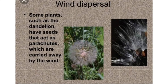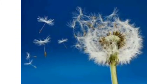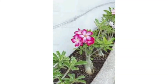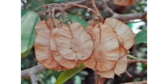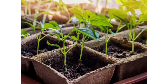First, dispersal by wind. Many seeds are carried away by the wind. The seeds of dandelion, desert rose, and milkweed are like parachutes. The winged seeds of the Indian elm tree glide in the wind. The wind carries such seeds away from the mother plant. Some of these seeds fall on the ground, get covered with soil, and germinate when it rains.